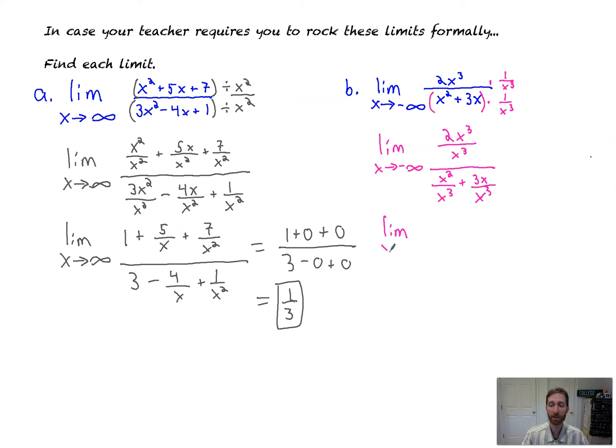Now, we've got the limit as x goes to negative infinity. It's a lot longer than the basic concept. That's for sure. But worth the trip. x cubed's divided out. You get 2 all over x squared over x cubed. Well, that's 1 over x. Plus 3x over x cubed is 3 over x squared.